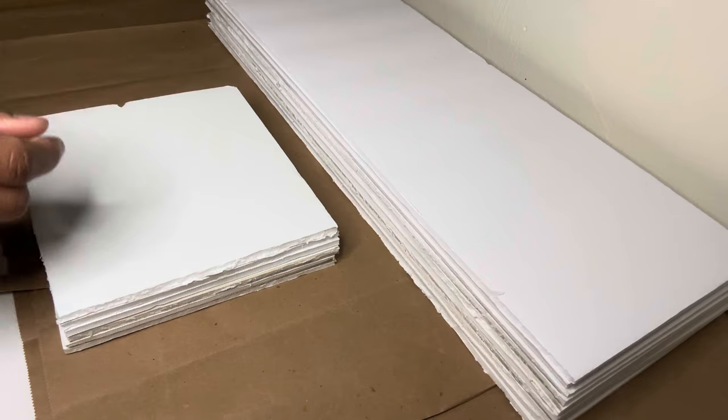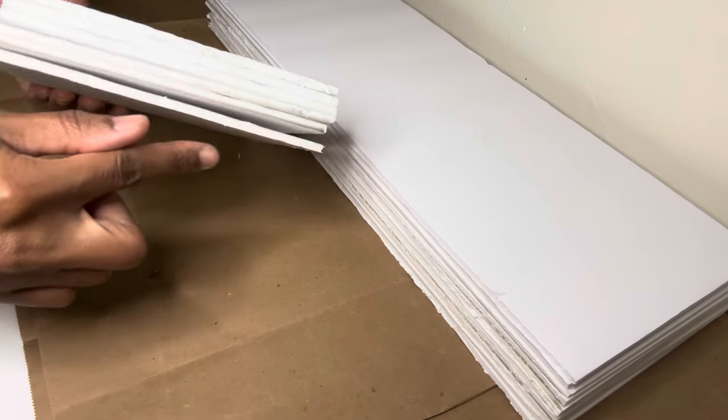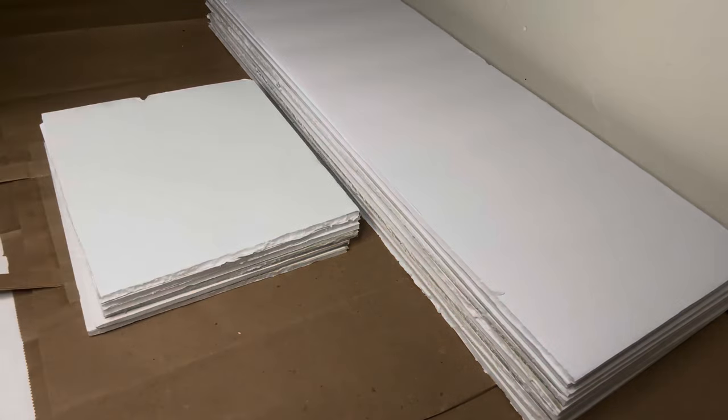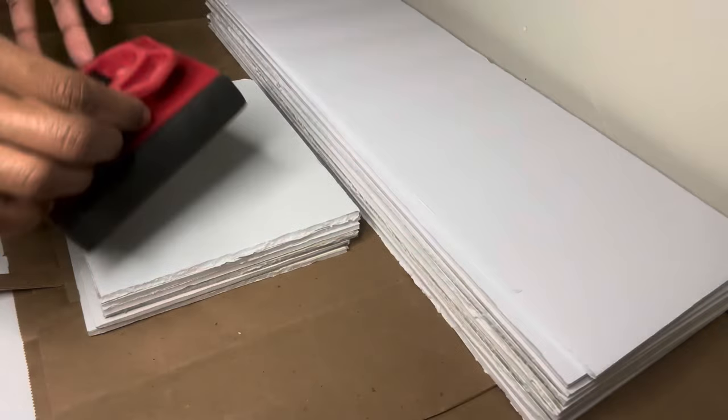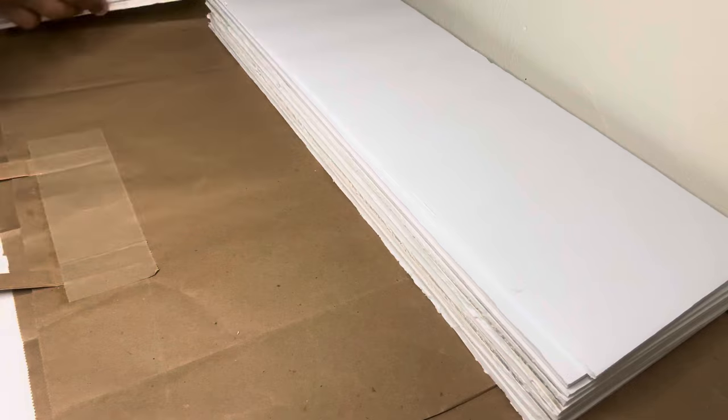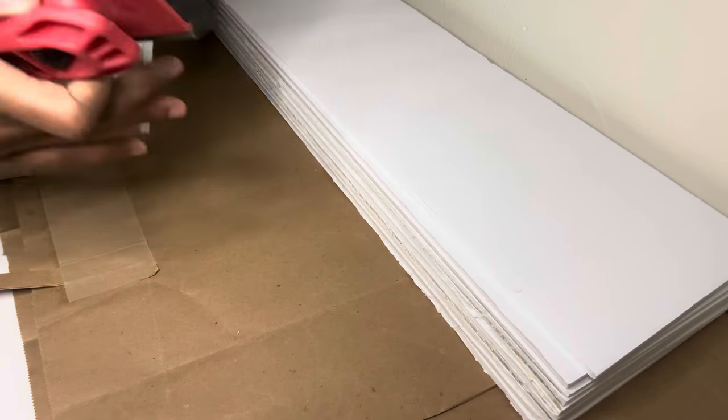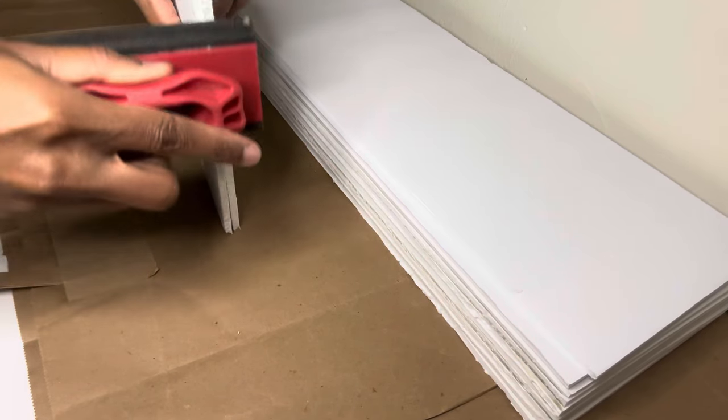So I have 10 rectangular pieces and then I have six of these squares and then I also have two big triangle shapes, and I'm going to sand all the sides so that way all the sides are as smooth as possible.